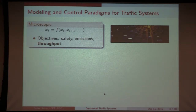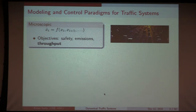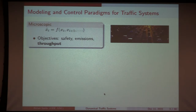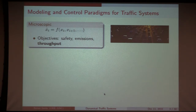In the microscopic regime, models typically keep track of the state of individual vehicles. Here, xi denotes the position of vehicle i. In general, the speed of a vehicle depends upon the location of other vehicles in the system. For a human-driven vehicle, it depends on the vehicle in front and neighboring lanes. In connected vehicle paradigms, this information structure could be complex — and in fact, it's something you can design. Not only can you design the information structure, but you could also design the speed-following behavior of vehicles, subject to safety constraints.